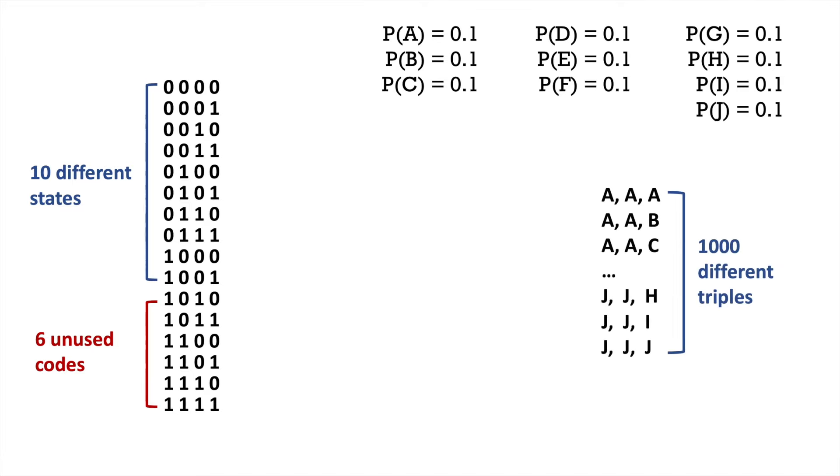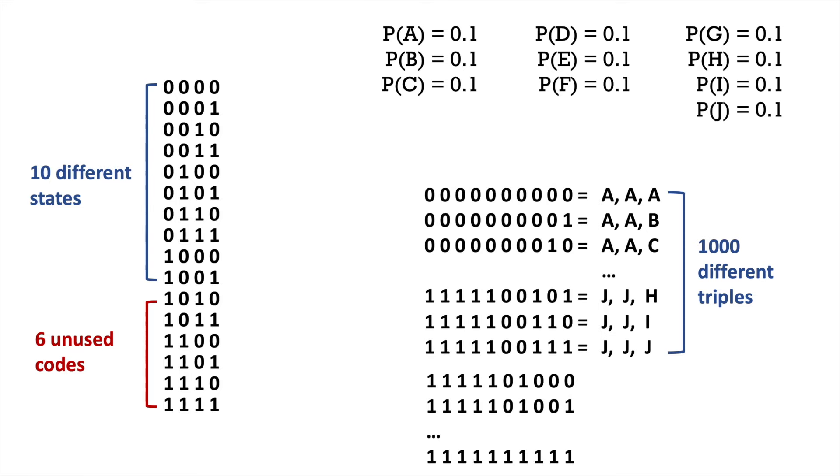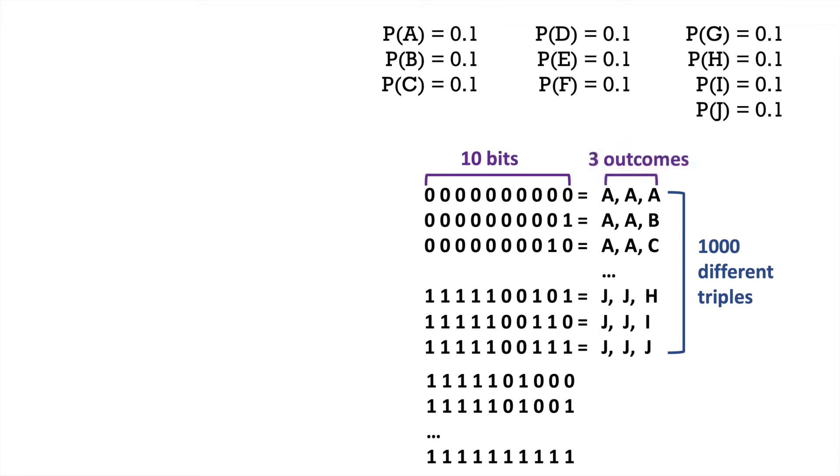Each outcome can be 1 of 10 different states, so there are 1000 different possible triples of outcomes. 10 bits will give us 1024 different states as 2 to the 10 equals 1024, which is sufficient to encode all 1000 unique states. So what we're saying is that with 10 bits, we can encode 3 independent outcomes. The average number of bits per outcome is then 10 divided by 3, which equals 3.333.